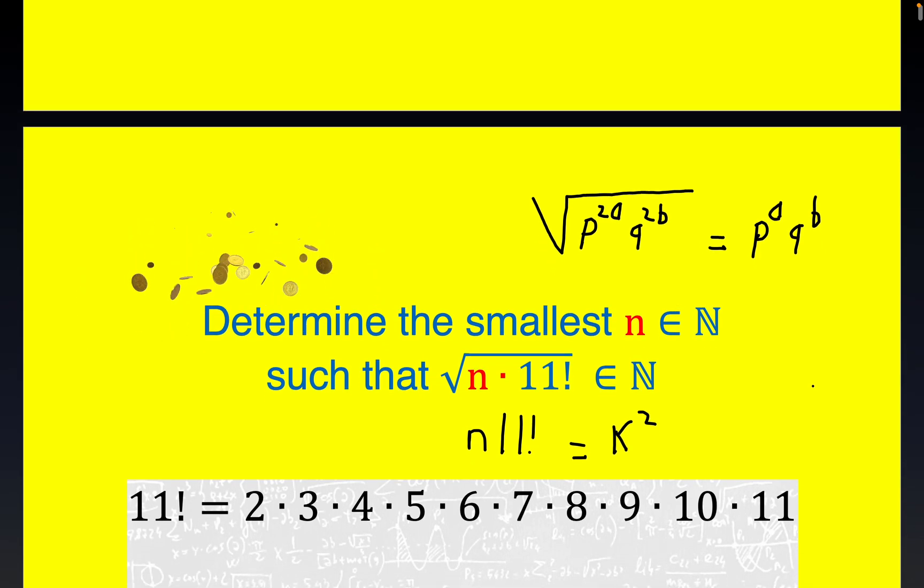Now the very first thing we'll do is write down the definition of 11 factorial. Notice I left out the superfluous one, it's the multiplicative identity, so we can leave that out.